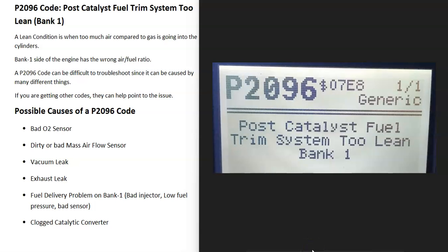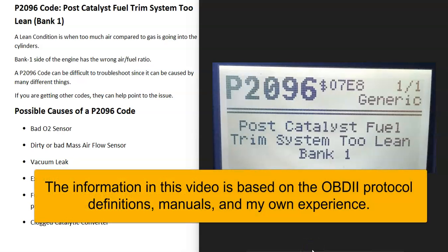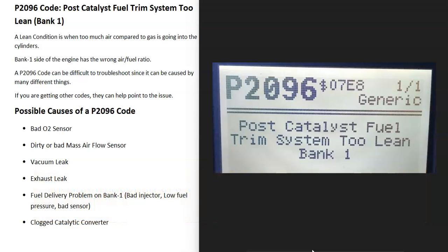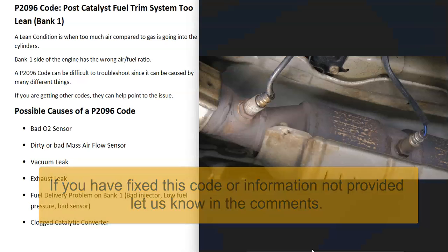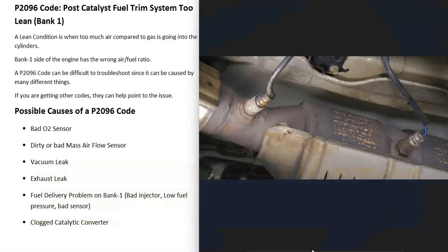Today I'm talking about a P2096 code — what it is and how you go about fixing it. A P2096 code is a post catalyst fuel trim system too lean bank one. There are oxygen sensors located on the exhaust that do two things: they monitor the catalytic converter, and they monitor how much oxygen was burnt off during combustion. The computer uses this information to adjust the air-fuel ratio mixture going into the cylinders. The bank one upstream oxygen sensor is reading that the air-fuel ratio mixture is off — that there's more air going into the cylinders than there should be.